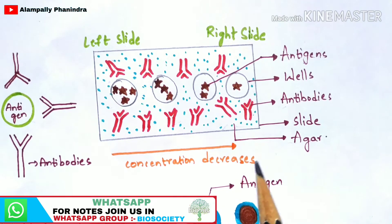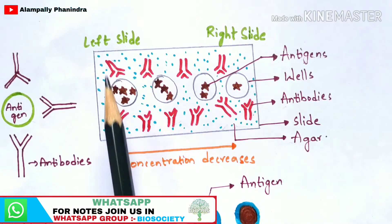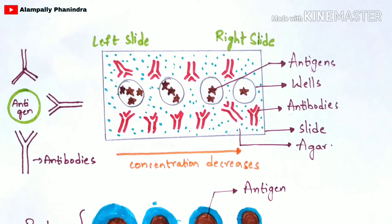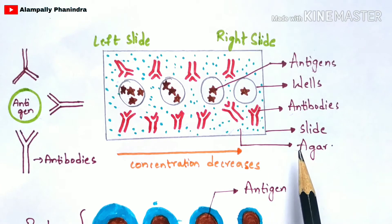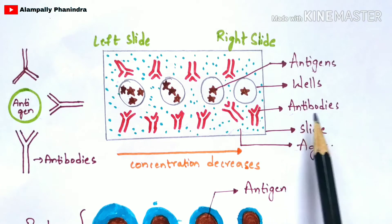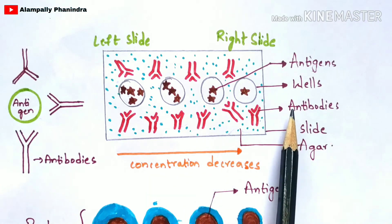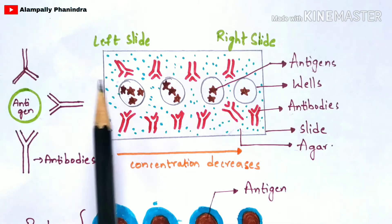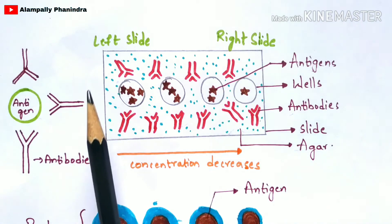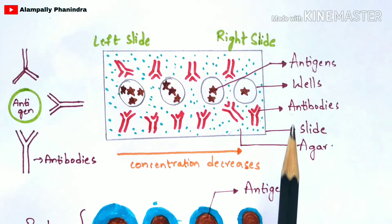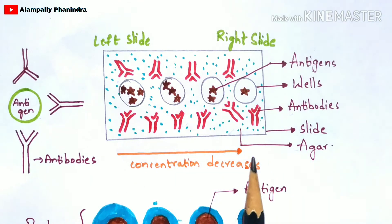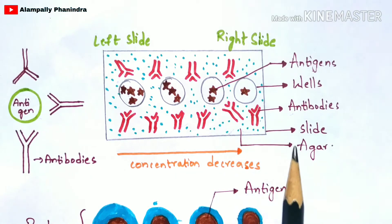In the first step, you are going to take a slide. In this slide, you are going to place agar solution along with the antibody solution. You have to pour this antibody solution and agar solution throughout this slide. After pouring the antibody solution as well as the agar solution, then what you're going to do next.